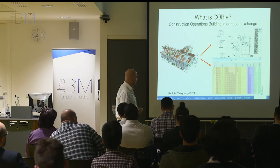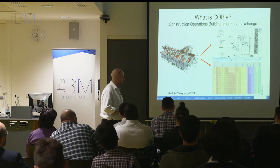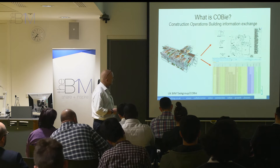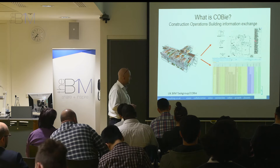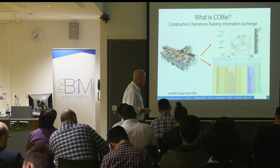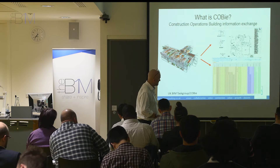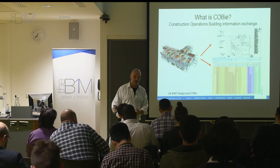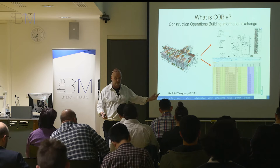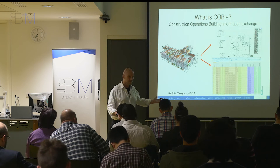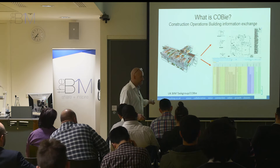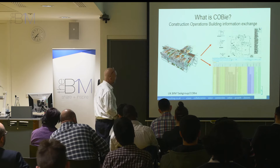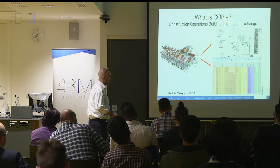So we talked about Level 2 outputs before — we'll have some geometry, we'll have some drawings, we'll have a COBie spreadsheet. If you can use Excel, you can use COBie. COBie stands for Construction Operations Building Information Exchange.